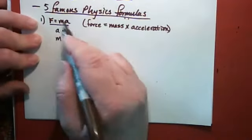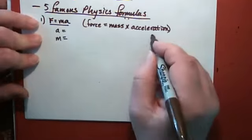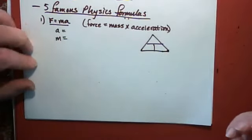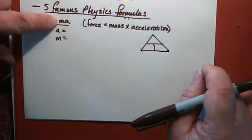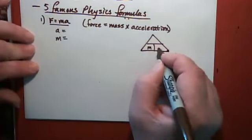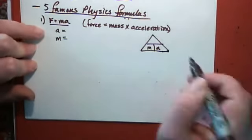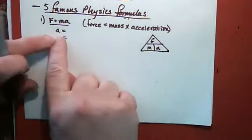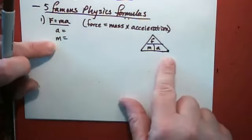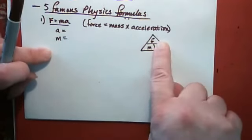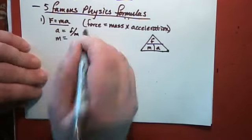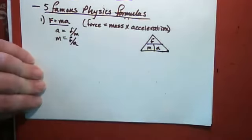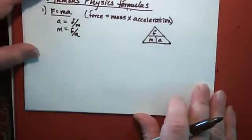Rearranging a simple equation like this isn't all that difficult, but there will be harder ones with three terms later, so it's good to practice with the easy ones. F equals M times a — M times a means M and a have to go on the bottom, and that leaves F in the other space. So if you want to know what a equals, cover up a and see what's left: a is F over M.